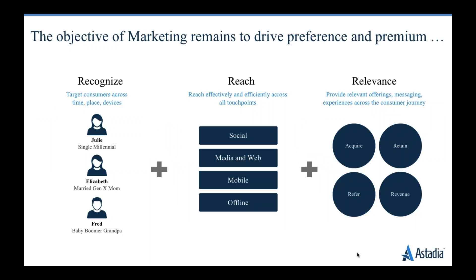When we think about a DMP and segmentation and who we're really targeting, there are three key areas. We want to be able to recognize people — who are we segmenting against? Is it millennials, Gen X, baby boomers, geographies? Being able to target the right people and build those demographics is key. Then how do we reach them — is it social, media, or mobile? And how do we make them relevant? How do we drive a loyalty program and convert this into revenue? These are all key areas as we think about how to make the DMP platform successful.